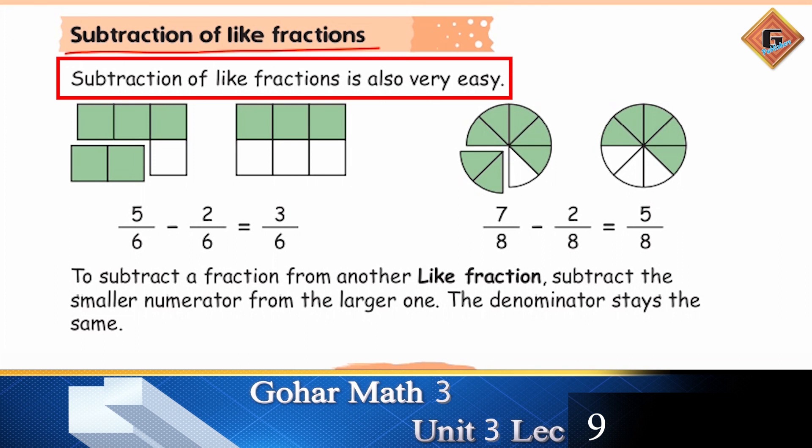You are going to subtract. Yaha pe kitne hai aapke 1, 2, 3, 4, 5, and 6 parts - 6 hain. Aur us mein se color kitne hain? 1, 2, 3, 4, 5. 5 out of 6, 5 over 6.